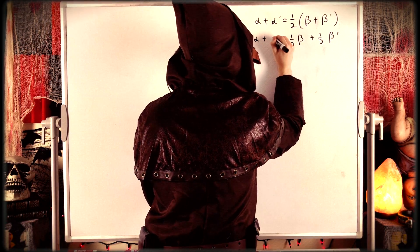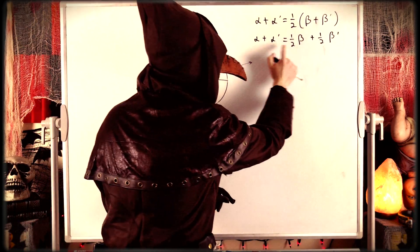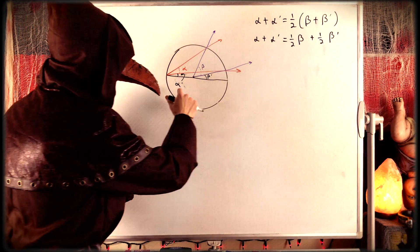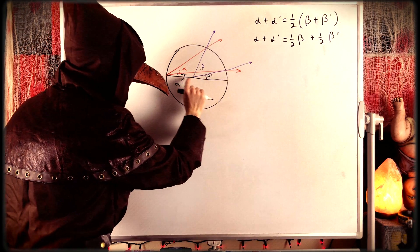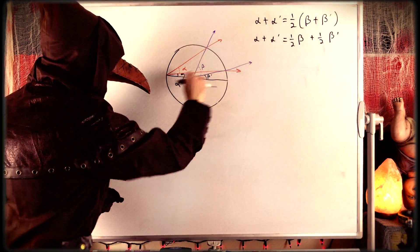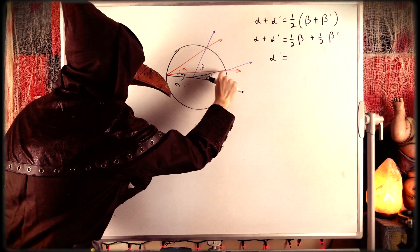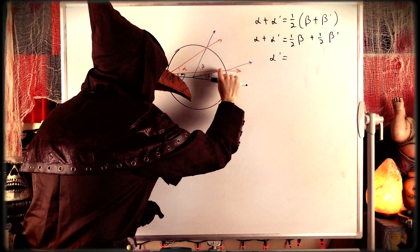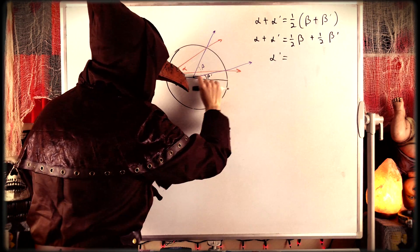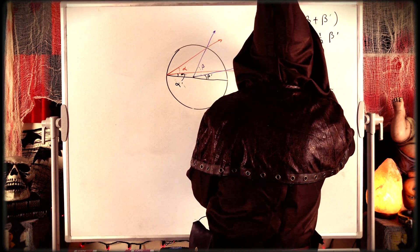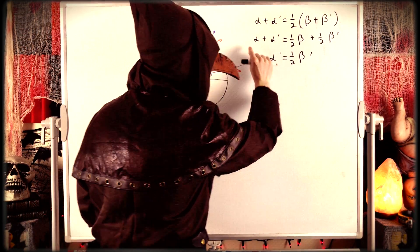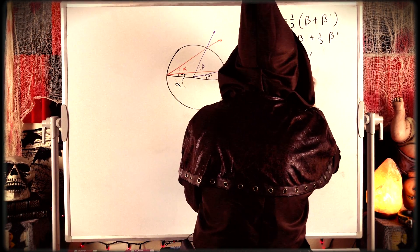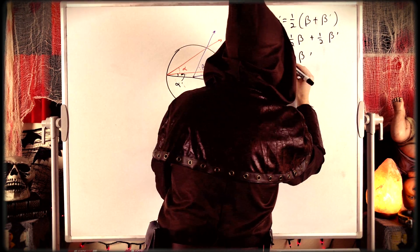We would like to get rid of alpha prime and one half beta prime to be left with alpha equals one half beta. We can do that, because alpha prime is itself an inscribed angle containing the diameter of the circle. So by case 1, alpha prime equals one half beta prime, since beta prime cuts the same arc as alpha prime. Thus, we can subtract this equation from the previous one, getting rid of alpha prime on the left and one half beta prime on the right, leaving us with alpha equals one half beta.